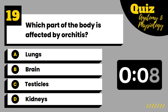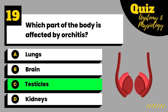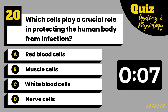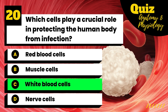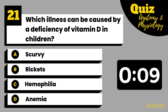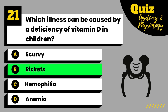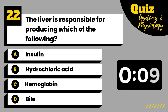Which part of the body is affected by orchidus? Which cells play a crucial role in protecting the human body from infection? Which illness can be caused by a deficiency of vitamin D in children? The liver is responsible for producing which of the following?